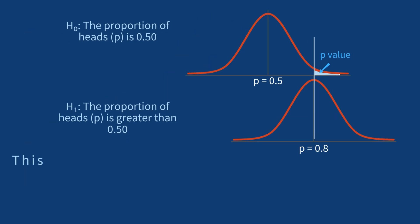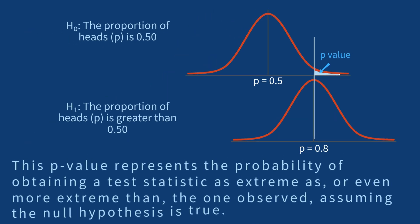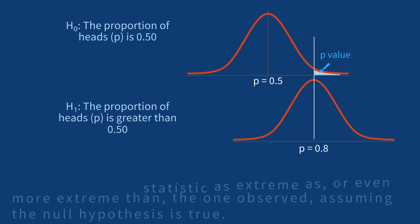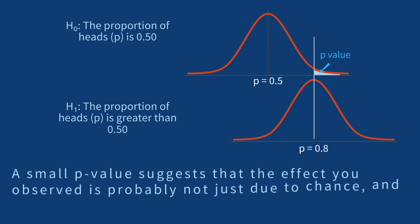This p-value represents the probability of obtaining a test statistic as extreme as, or even more extreme than, the one observed, assuming the null hypothesis is true. A small p-value suggests that the effect you observed is probably not just due to chance, and the coin might be biased.